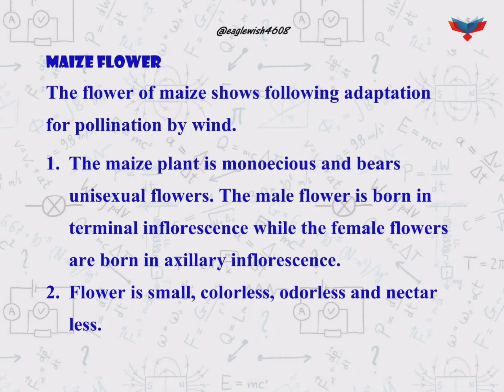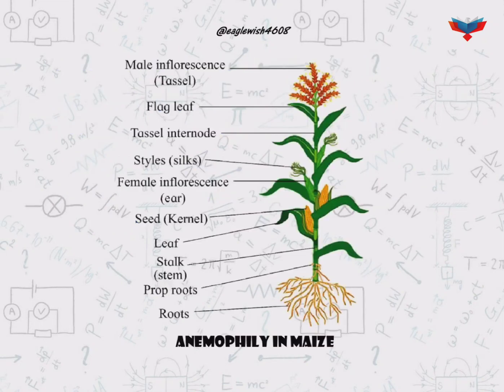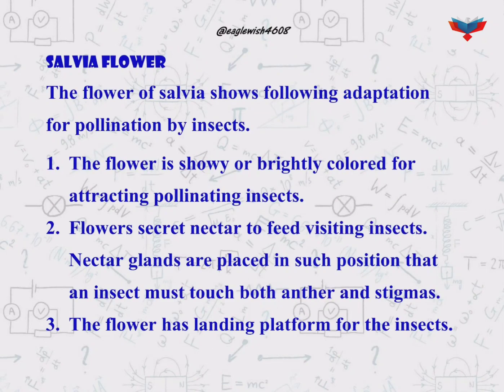Firstly, we will mention about the maize flower and what kind of adaptation it shows for wind pollination. Anemophily is the term used for pollination by wind. The diagram here is showing the maize flower. After that we will mention about the salvia flower adaptation for pollination by insects.